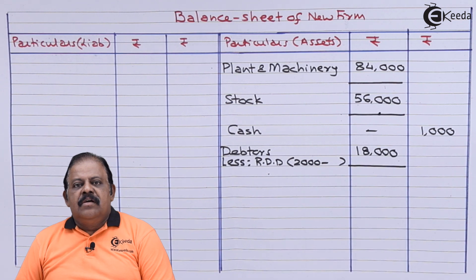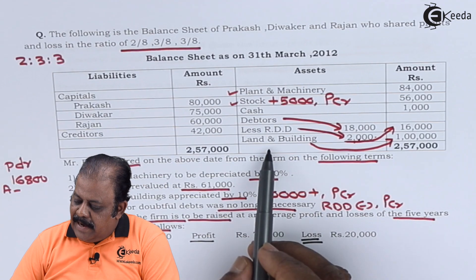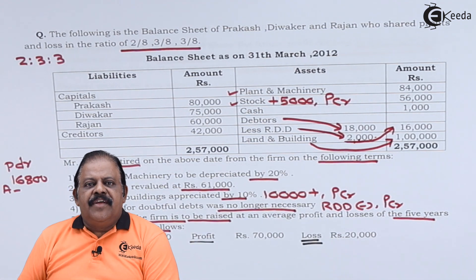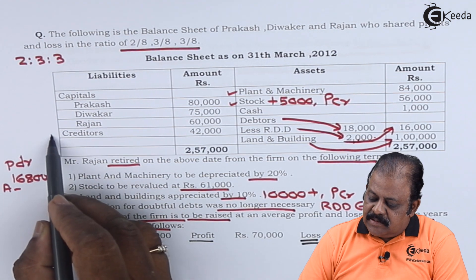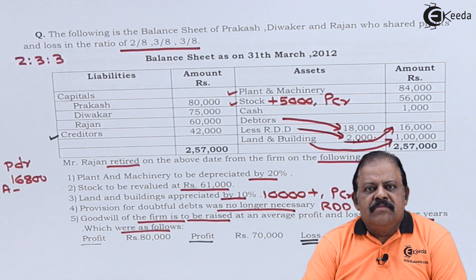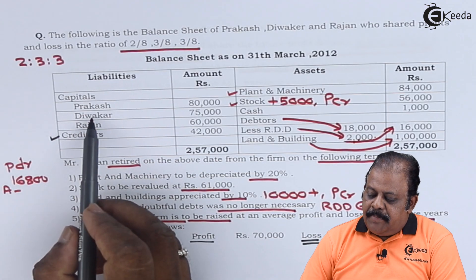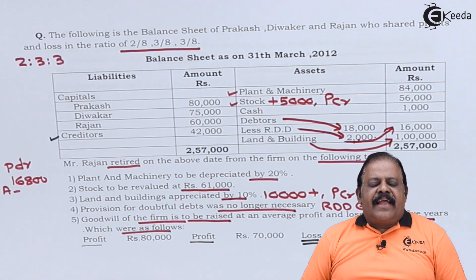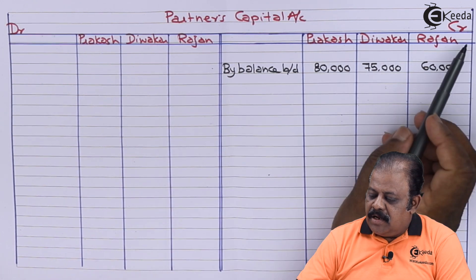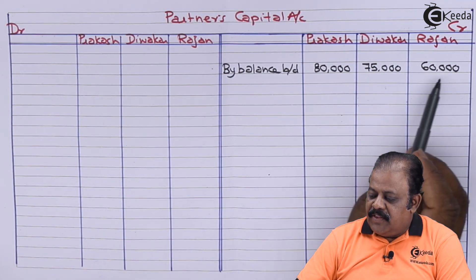Debtors 18,000 less RDD 2,000 — but there is an adjustment on RDD. Land and building — there is an adjustment, so it will be recorded in the inner column as 1,00,000. Liability side: creditors — there is no adjustment on creditors, so it will be recorded as 42,000 on the liability side. Partners' capital — Prakash 80,000, Diwakar 75,000, Rajan 60,000 — will be recorded to the credit of their capital accounts by balance brought down.